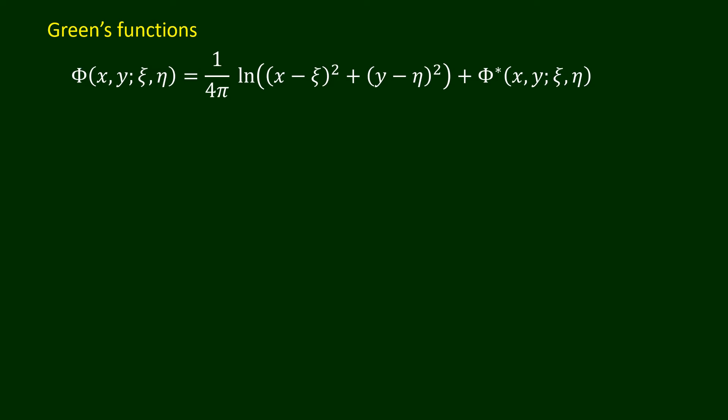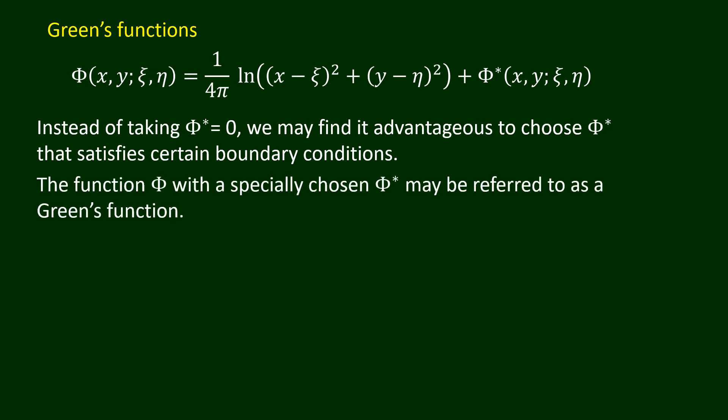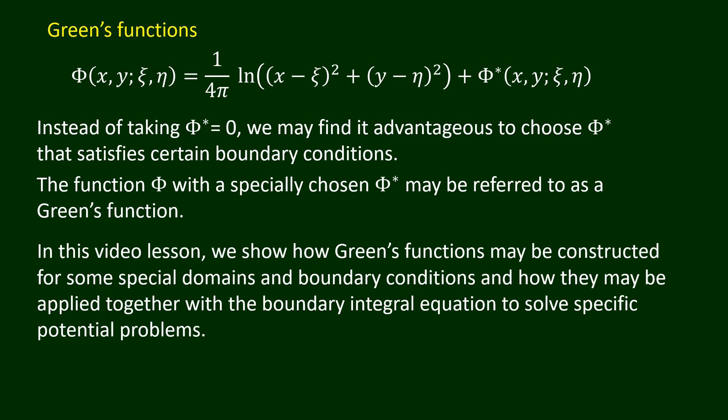Instead of taking capital Phi star equal to 0, we may find it advantageous to choose capital Phi star that satisfies certain boundary conditions. The function capital Phi, with a specially chosen capital Phi star, may be referred to as a Green's function. In this video lesson, we show how Green's functions may be constructed for some special domains and boundary conditions, and how they may be applied together with the boundary integral equation to solve specific potential problems.